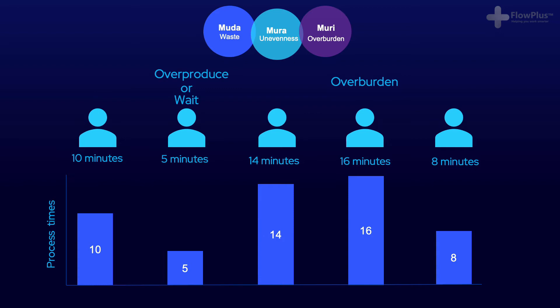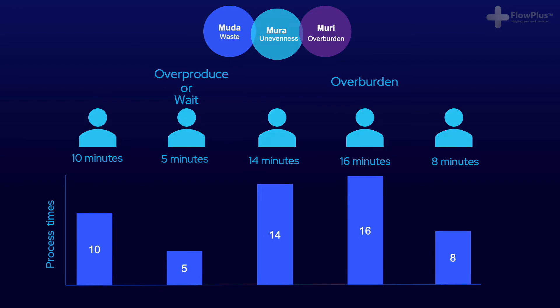Muda, waste, is often the symptom of overburden, mooree, and variation, moora. Balancing helps reduce both of these with the aim to reduce muda, waste.